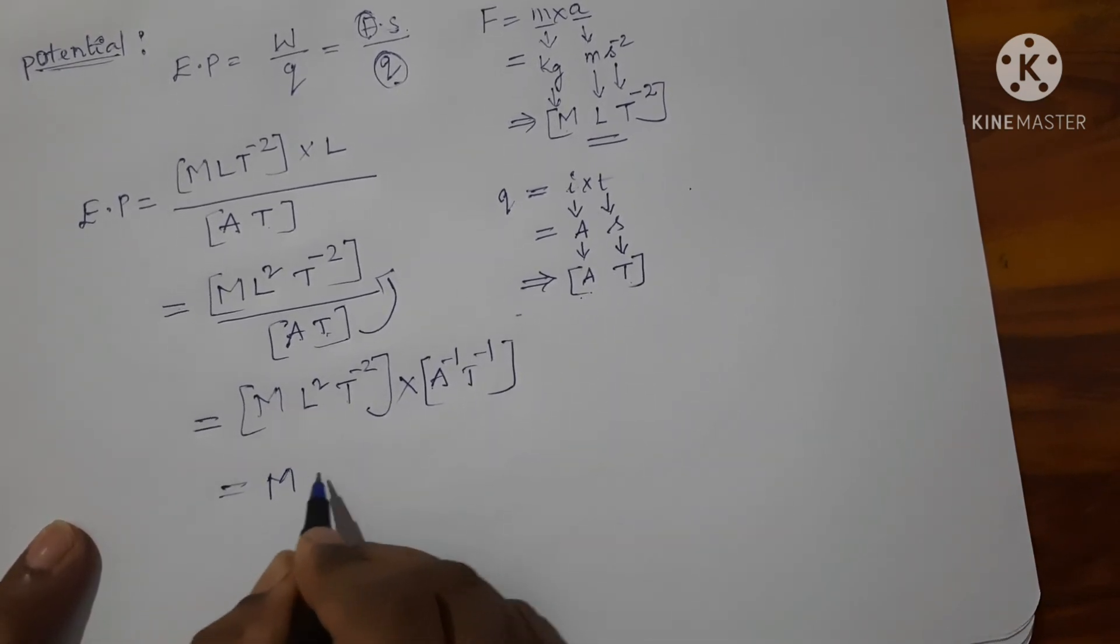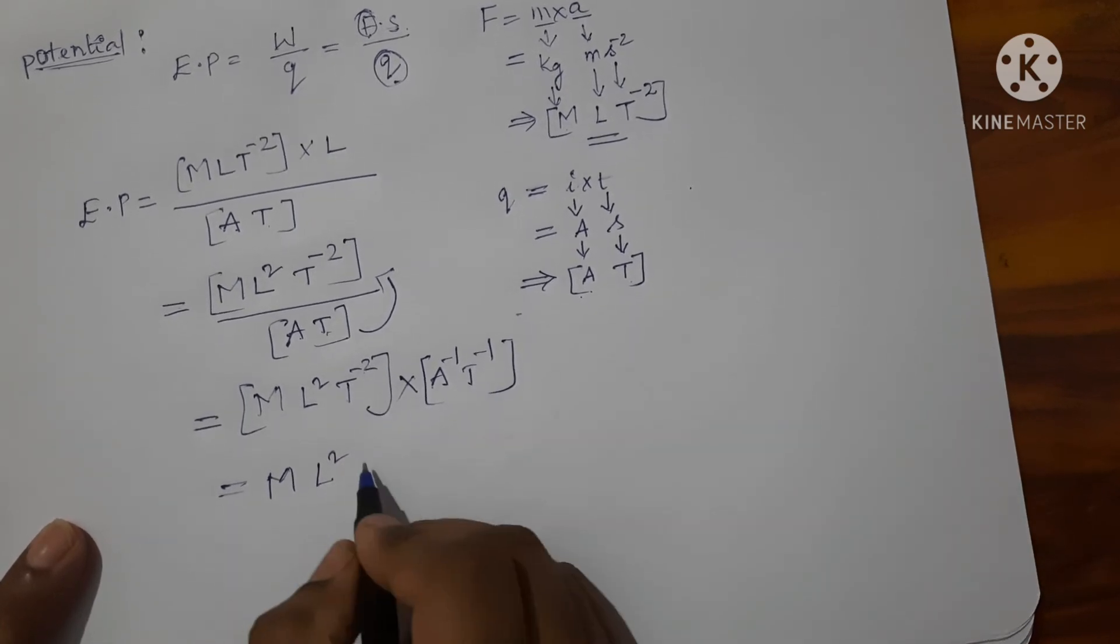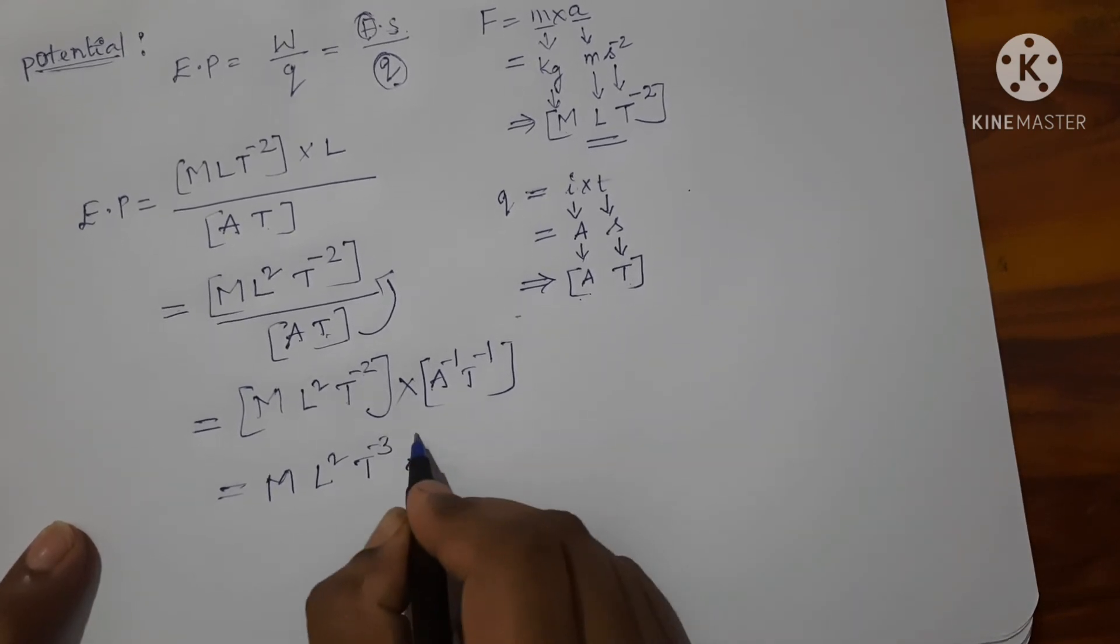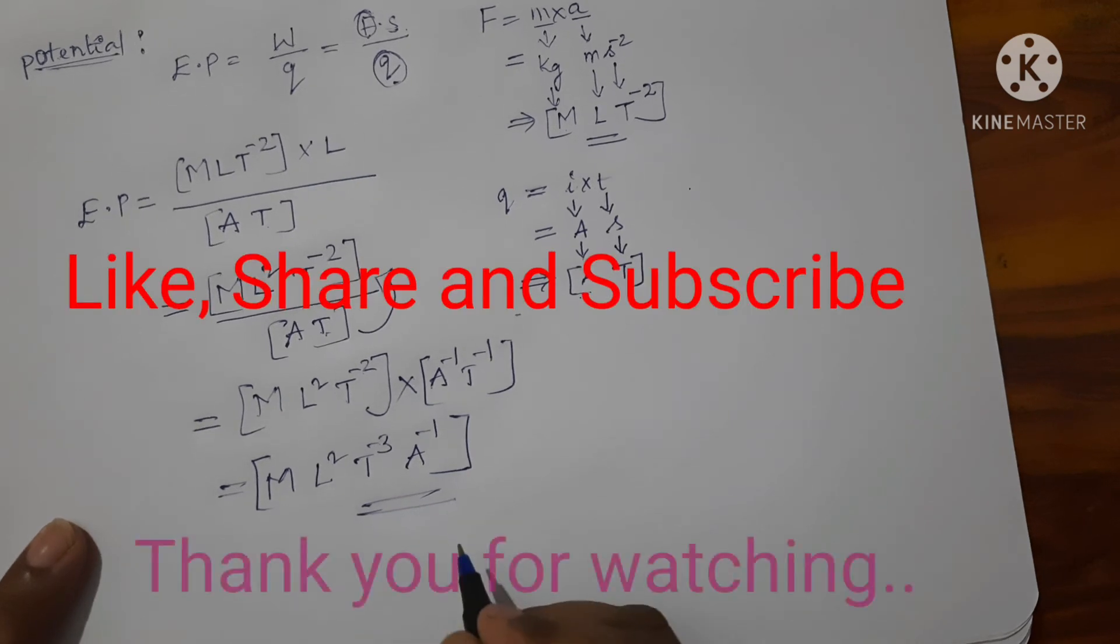MLT power minus 2 and T power minus 1 will be T power minus 3 into here A power minus 1. This is the dimensional formula for electric potential.